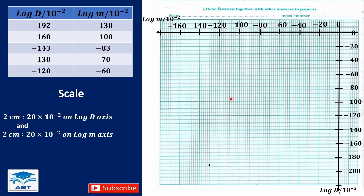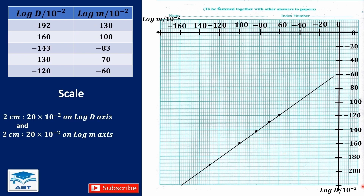The next point: negative 160 on log d is here, and negative 100 is also here, so they meet here. The next one: negative 143 — negative 140 is here, one box gives negative 142, and in the middle of the next box is negative 143. For log m, 80 plus one box gives 82, and the middle of the next box gives 83 — they meet here. The next point: negative 130 on the vertical axis is between negative 120 and negative 140, and negative 70 is between negative 60 and negative 80 — they meet here. The last point: negative 120 on the log d axis and negative 60 on the log m axis — they meet here. We now draw the line of best fit.